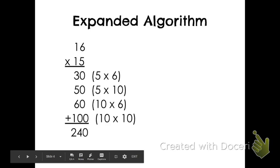So expanded algorithm, I check out each one of the place values, which is just like the box. So in this first one, I multiply everything times the 5.